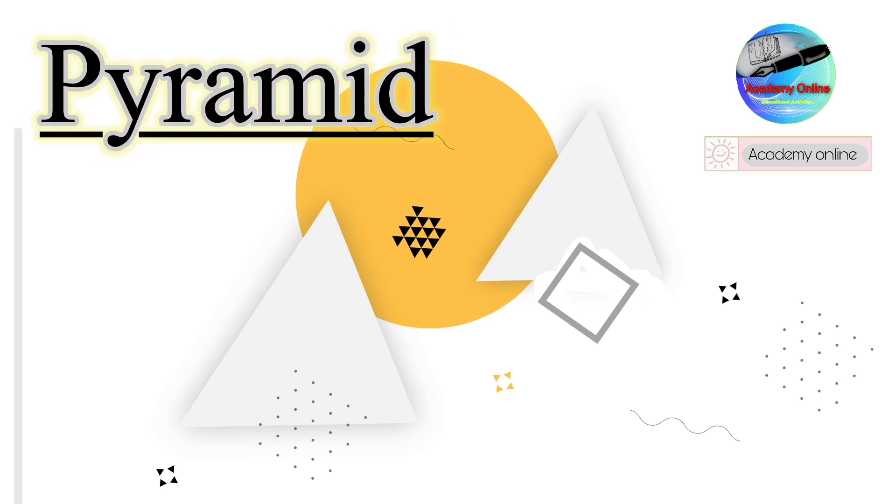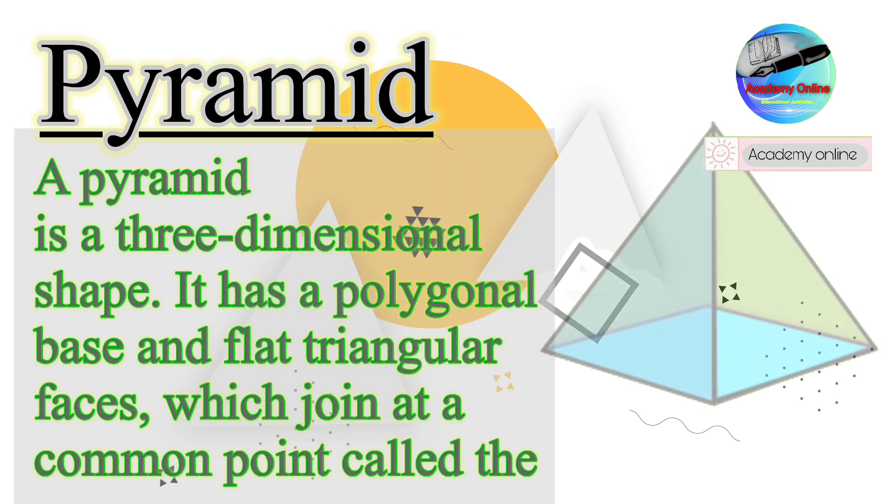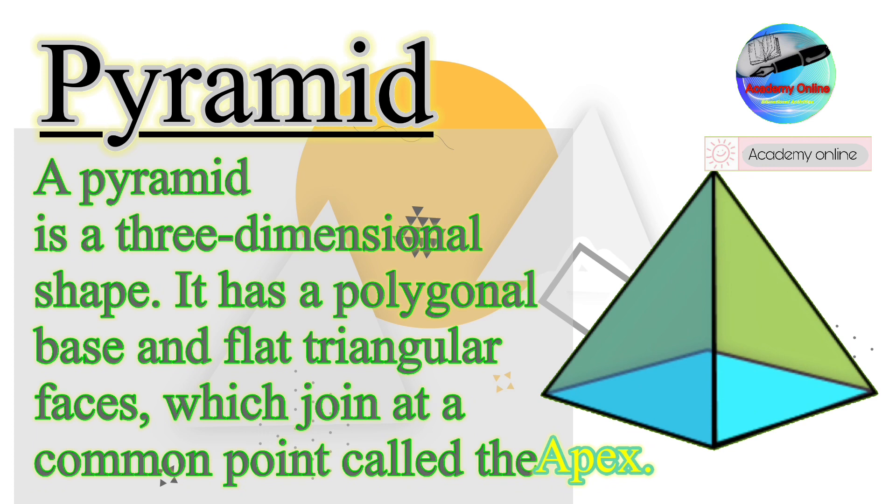Pyramid. A pyramid is a three-dimensional shape. It has a polygonal base and flat triangular faces which join at a common point called the apex.